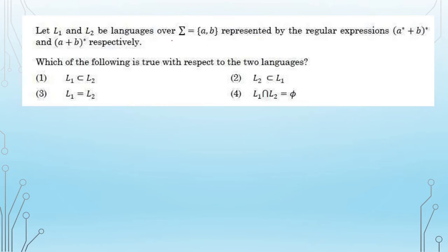Coming to the next question: let L1 and L2 be languages over sigma A and B, represented by given regular expressions. They ask what is true with respect to the two languages — which is a proper subset, whether their intersection is empty, or whether the languages are equal. Whenever a regular expression is given, draw its automata diagram, i.e., a transition system.